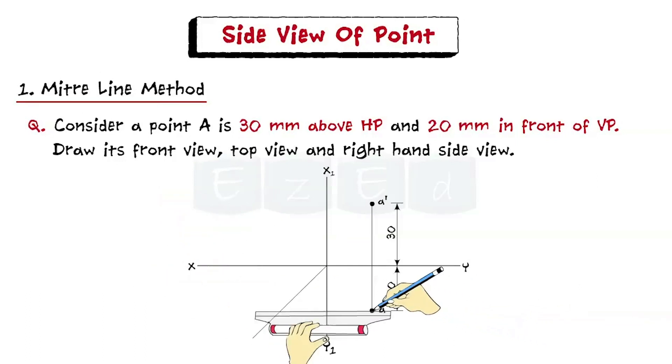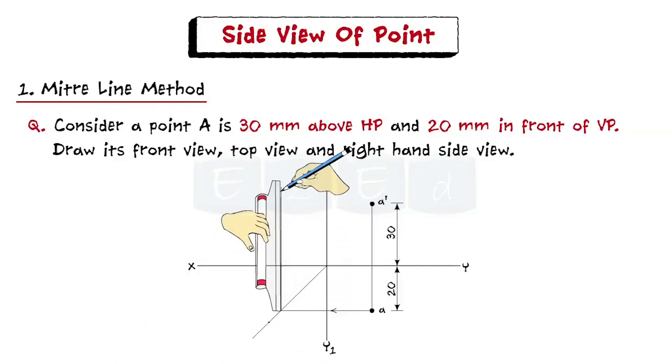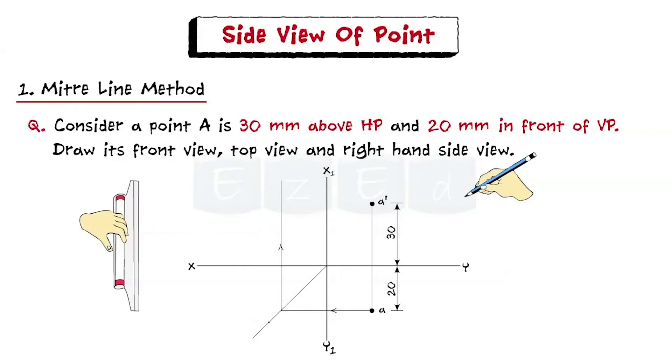Step 6. Draw a horizontal line from A till it cuts the meter line and then project the line upward. Step 7. Now, draw a horizontal line from A dash. The intersecting point is A double dash which is the required right side view.